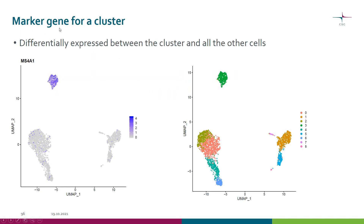Let's start with the marker gene. Here we have two UMAP visualizations of the same data. On the right hand side, we have colored cells by the cluster they belong to, so each dot is a cell. On the left hand side, we have colored the same cells by the expression of a particular gene. As you can see, it's expressed in cluster 3 and not so much in the other clusters, so it's a good marker for this cluster.